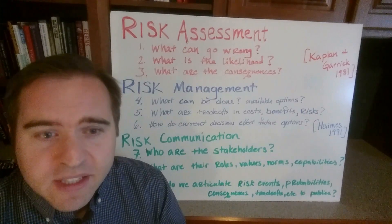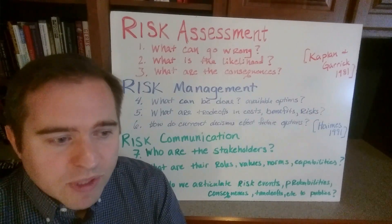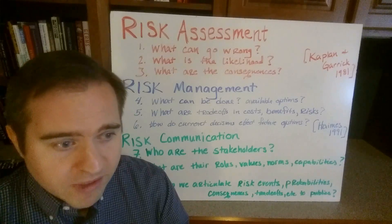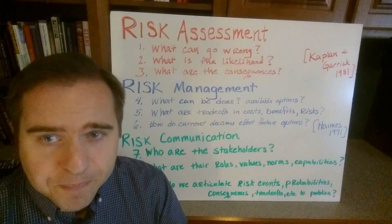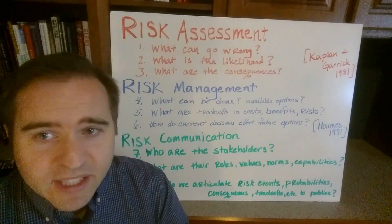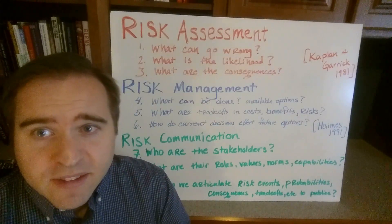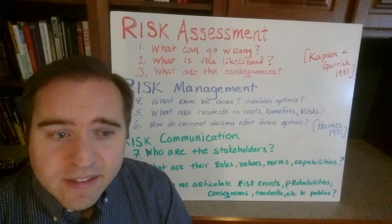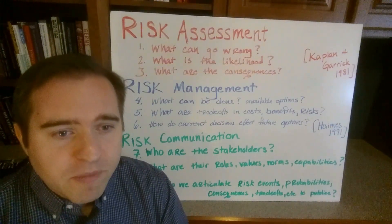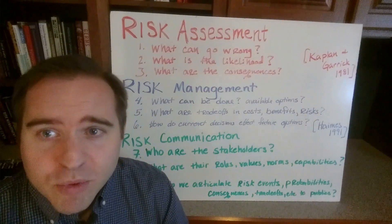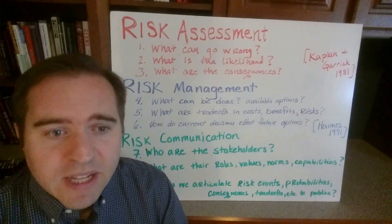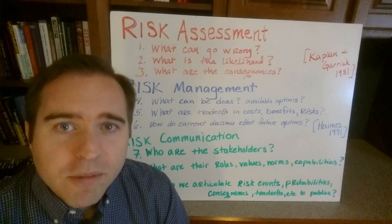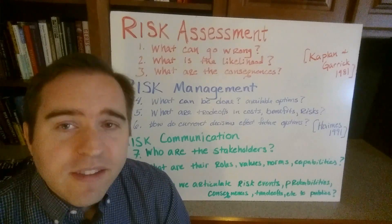The likelihood question answers two pieces: what's the likelihood of the risk event itself — the probability or uncertainty — and what's the likelihood of the significant effects that we're concerned with. The third question involves creating some kind of model or framework or mental model that helps describe how these risk events lead to outcomes that are undesirable.